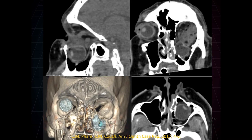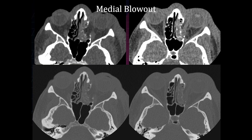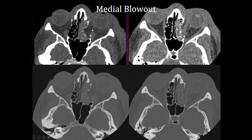Trauma can be quite severe — literature cases show an orbital floor fracture with the globe herniated into the maxillary sinus. Deformity or irregularity of the globe may suggest perforation, though we do not identify globe perforation well on CT. Here is an example of an acute medial blowout fracture with fat herniating into the ethmoid cells and significant adjacent soft tissue swelling, visible on both soft tissue and bone windows. The globe appears slightly retracted due to orbital volume loss.